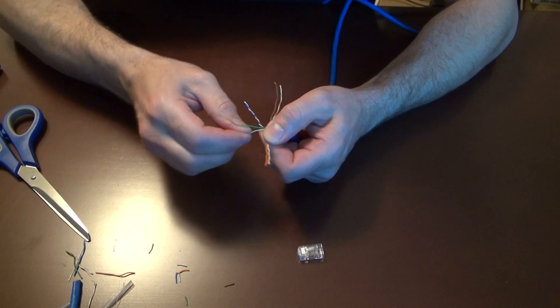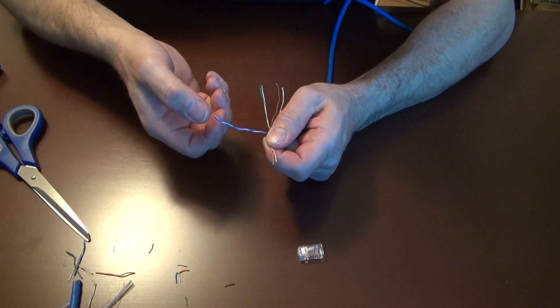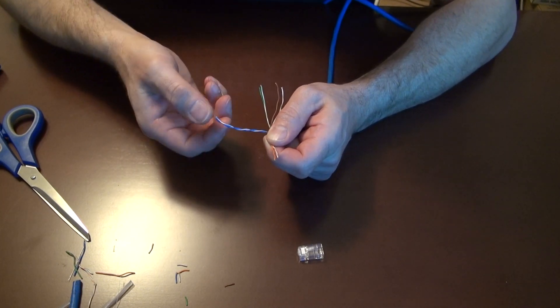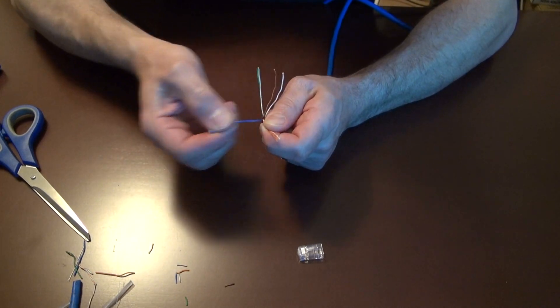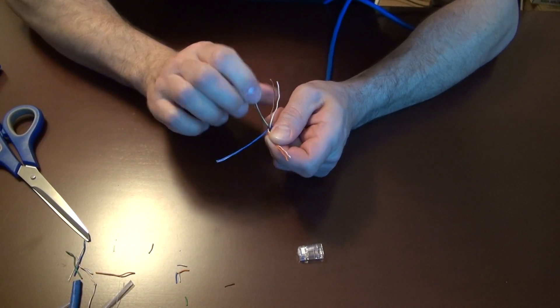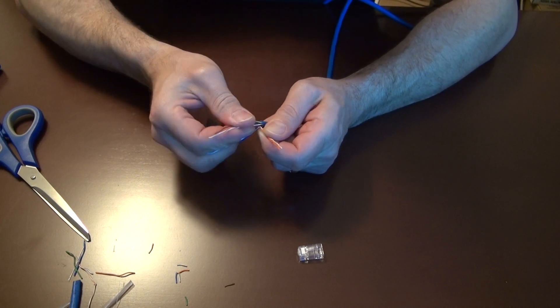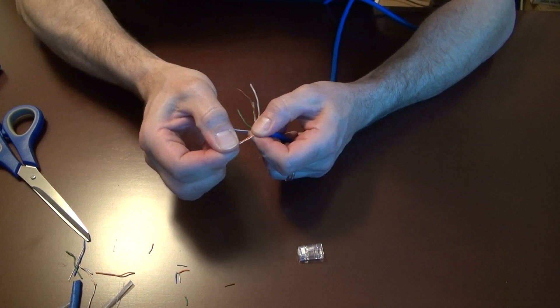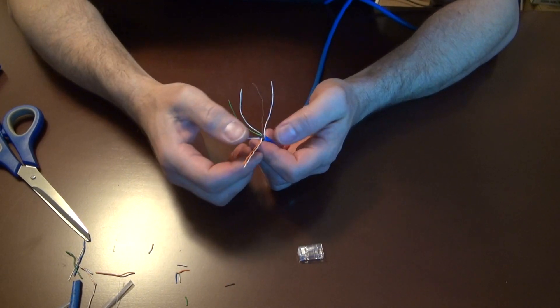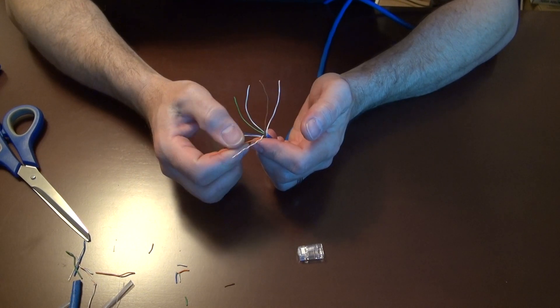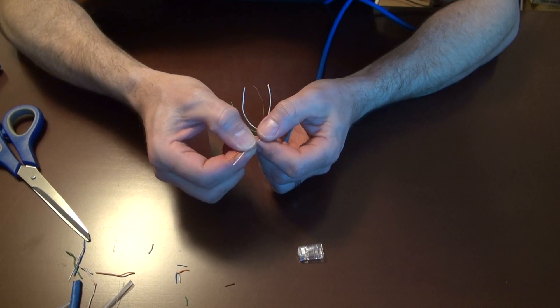The blue pair and the brown pair really don't do much unless you're doing PoE, and get your positive and negative through the blue and brown. But for data and stuff, the orange and the green pair are the ones you're going to use. Once again, we did green first, so now we're going to do orange.